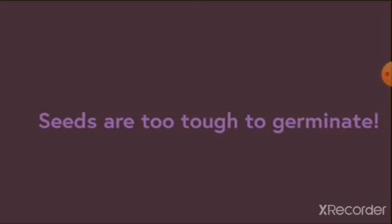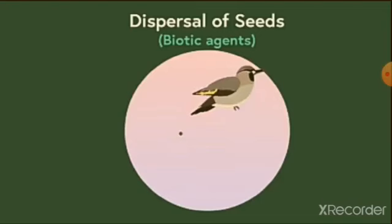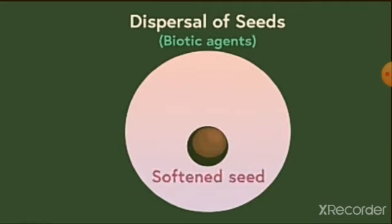Now, if such a fruit is consumed by a bird, then the seeds do not get digested in the bird's body and are thrown away directly. However, the hard seed cover softens a bit due to the chemical activity present in the bird's stomach.